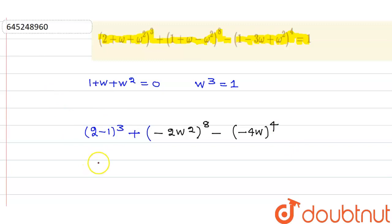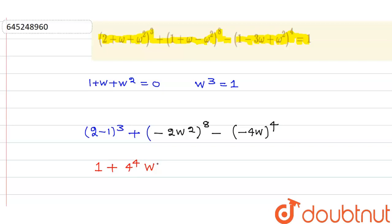The first term, 1 cubed, is simply 1. The second term: 2⁸ = 4⁴, and ω to the power 16 can be written as ω^(3×5) × ω, and since ω³ = 1, this reduces to ω. So the second term becomes 4⁴ × ω.